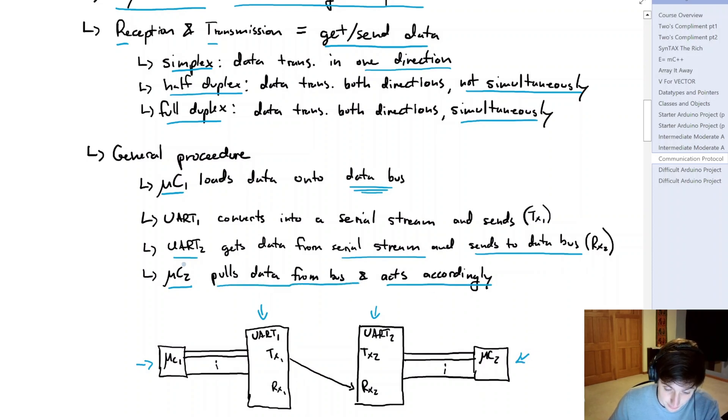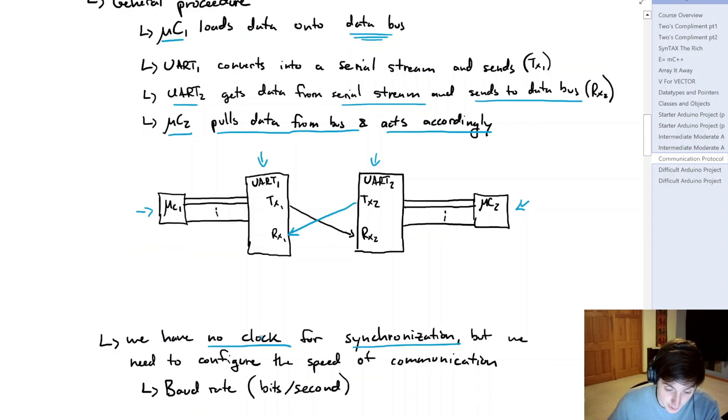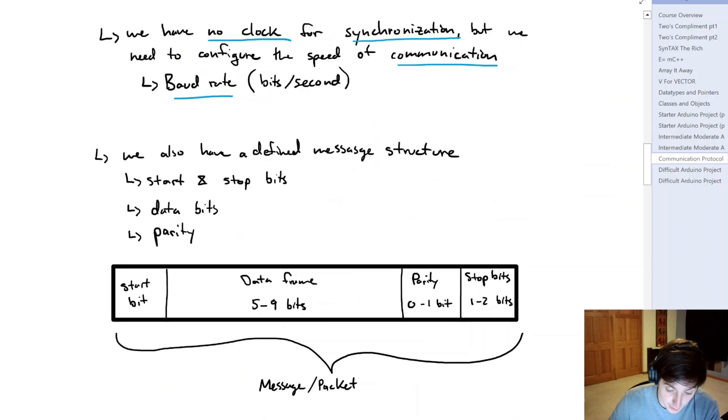So UART2 gets that data from the serial stream, puts it back to the data bus, and then we have a second microcontroller which would hold that data from the bus. But if we consider the half duplex and full duplex things we talked about, we could also have UART2 transmit to UART1. And because we have no clock signal for the synchronization of the messages, we need to configure the speed of communication on both of these UARTs. But if we actually start to think about what we're sending, we have to look at the defined message structure.